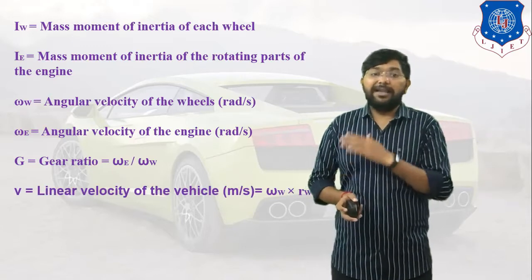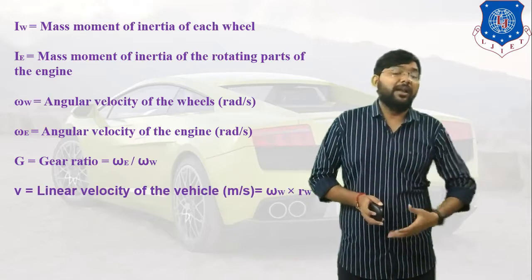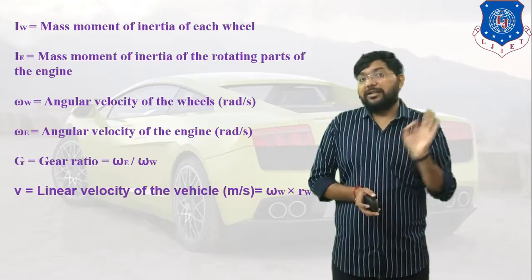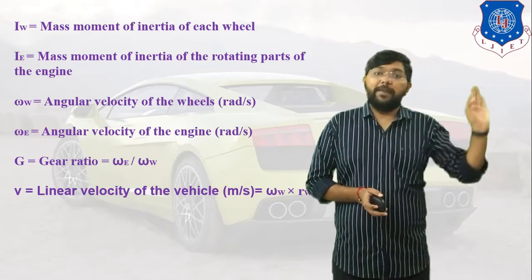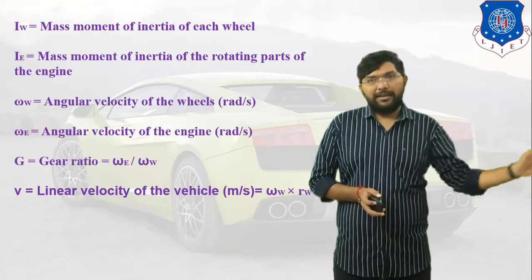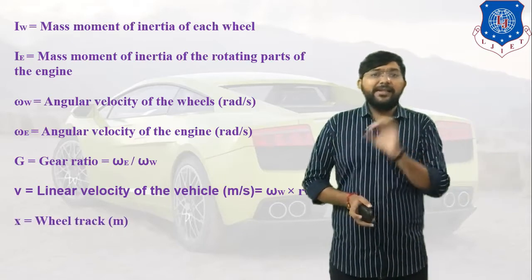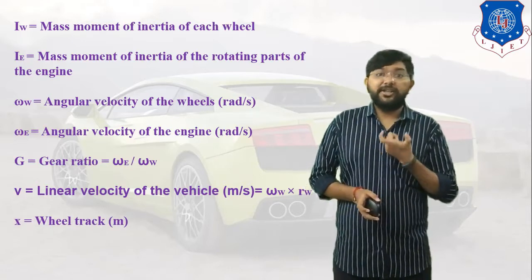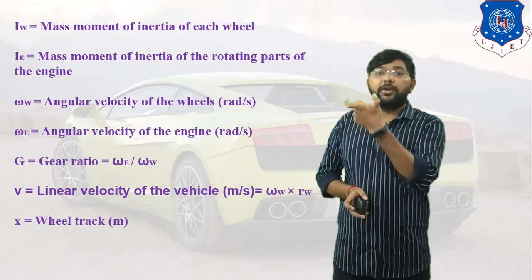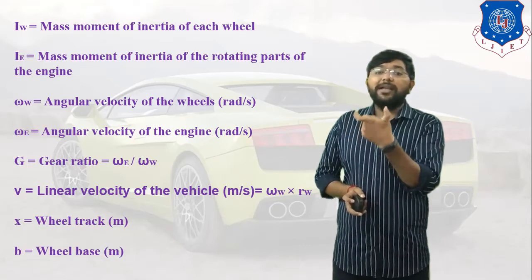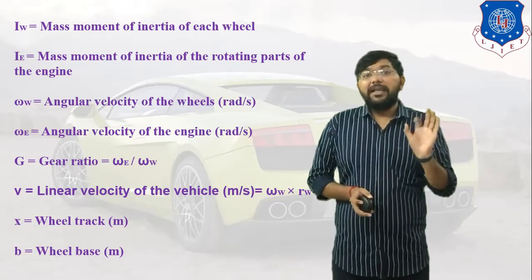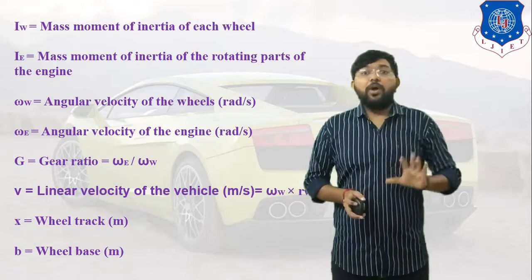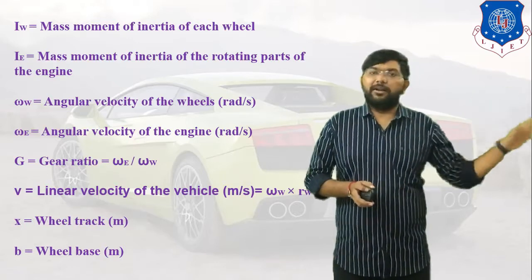Capital G is the gear ratio — it is the ratio of the angular velocity of the engine to the angular velocity of the wheel: G = ωE / ωW. Capital V is the linear velocity of the vehicle, where V = ω × R. Small x is the wheel track — the distance between the two front wheels of the car. Small b is the wheel base — the distance between the front wheel and the rear wheel.